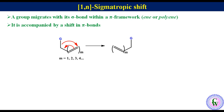In this lecture, we will focus only on 1N Sigmatropic Shift. The numbers in the bracket have special meanings. The left side number, which is 1 in this case, suggests that the group is bonded through the same atom in the reactant and the product. The right side number, which is N, suggests the number of the carbon atom of the pi framework to which group G is migrating. N can be 3, 5, 7, etc.